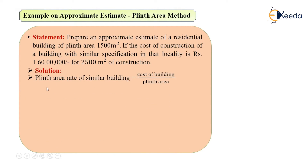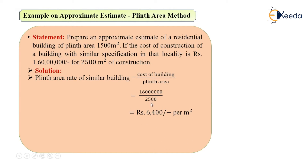First, I will calculate the plinth area rate of the similar building in that locality. It is given by cost of building divided by plinth area. Cost of building is 1 crore 60 lakh and plinth area is 2500 meter square. Dividing gives a value of 6400 per meter square. This is the plinth area rate of the existing or similar building in that locality.